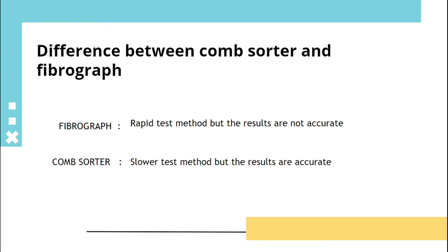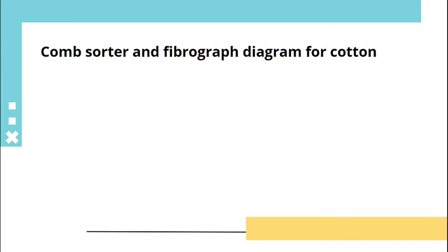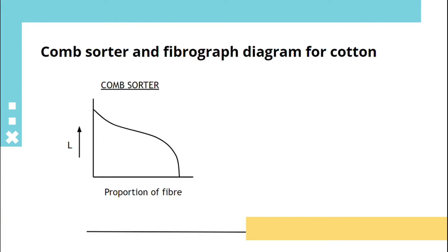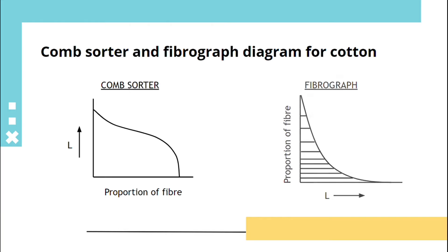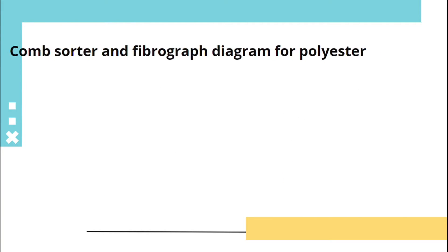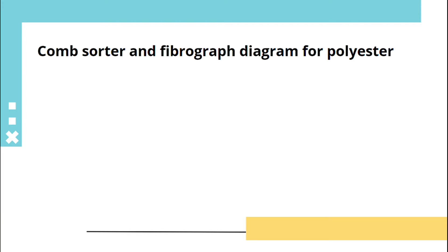The main difference between these diagrams is the change of axis. For cotton, this is a comb sorter diagram where the fibers are arranged in descending order of length. This is a fiber graph diagram for cotton when the axes are reversed.